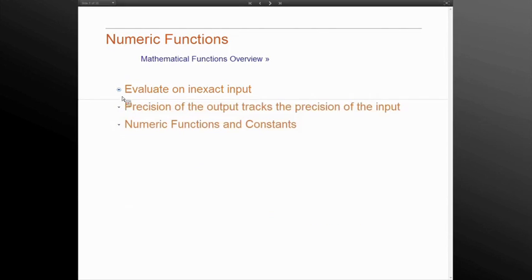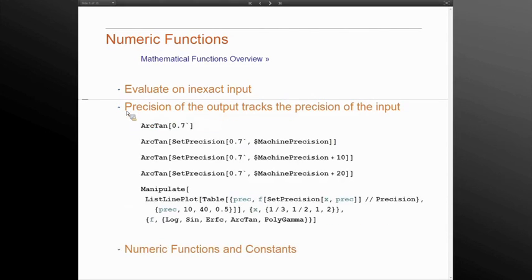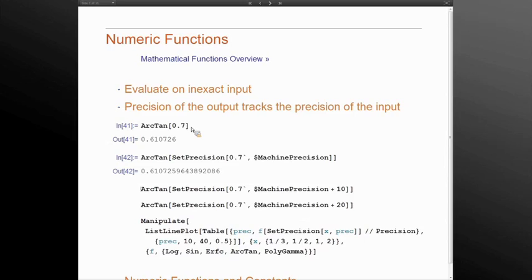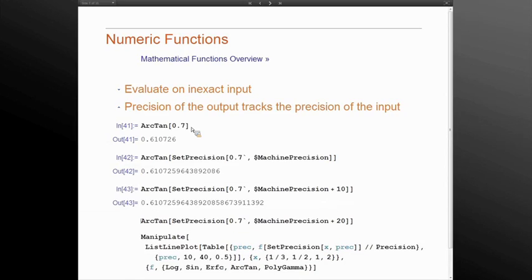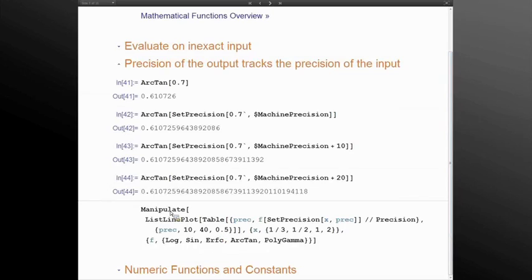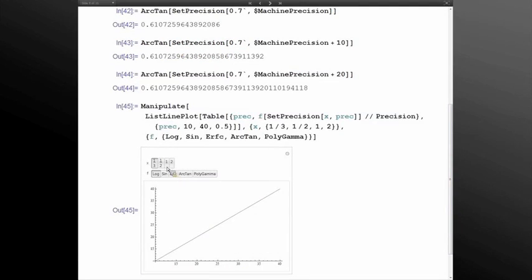Another feature of numerical functions is that their output tracks the precision of the input. Consider arctangent, we evaluate it with machine precision, we get machine precision out. Now we will set that to precision 16 and we will get precision 16 out. As we increase the precision of the input, the precision of the output tracks it and gets back the result. You see that they are all linear with different slopes.